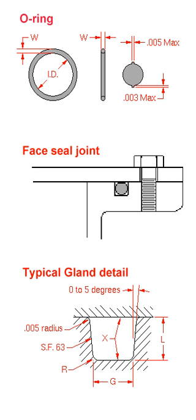A typical part number for a metric O-ring is IDxCS Material Shore Hardness; for example, 2x1 N70 defines an O-ring as 2 mm ID with 1 mm cross-section made from nitrile rubber at 70 Shore. O-ring material selection is based on chemical compatibility, application temperature, sealing pressure, lubrication requirements, durometer, size, and cost.